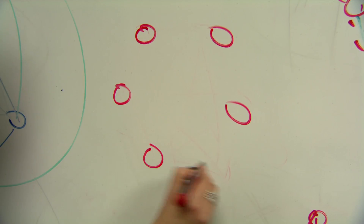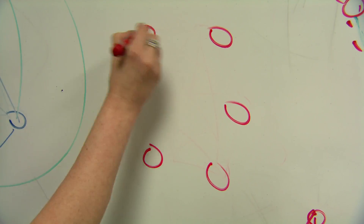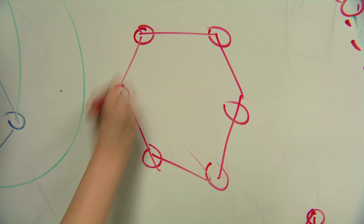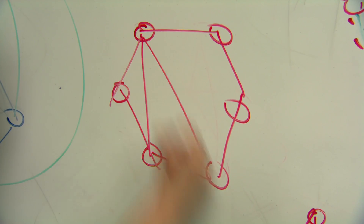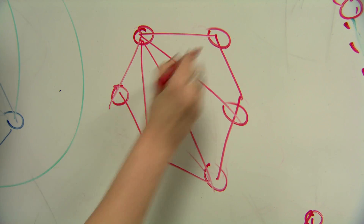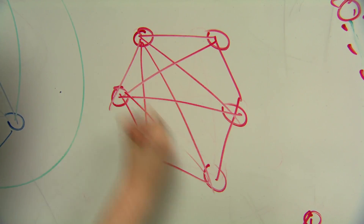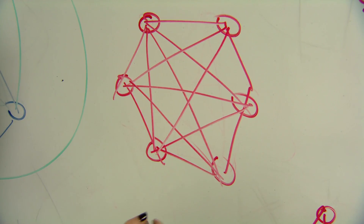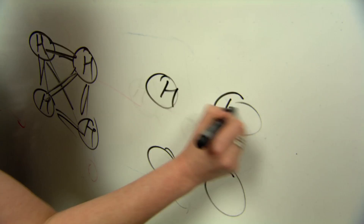Here's an example of an existence problem — the kind of thing I work on, but simple. Six people came to a party. Is it true that either there exist three people who know each other, or there exist three people who don't know each other? And the answer is yes.